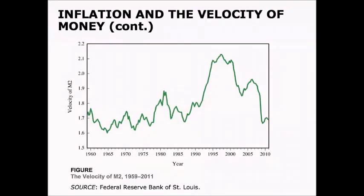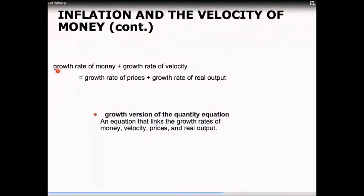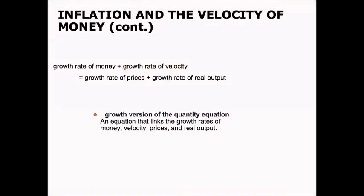So let's take the quantity equation and change it into growth rates. When we do that, we can say that the growth rate of money plus the growth rate of velocity is approximately equal to the growth rate of prices and the growth rate of real output. And so we have the growth rate of the money supply, and we have inflation, and we have the growth rate of real output.